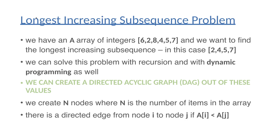An interesting example is the longest increasing subsequence problem — a typical problem solvable with dynamic programming. If we have an array with integers 6, 2, 8, 4, 5, and 7, we want to find the longest increasing subsequence. In this example, the longest increasing subsequence is 2, 4, 5, and 7, because each item must be smaller than the next. For instance, 6, 2 is not valid because 6 is greater than 2.